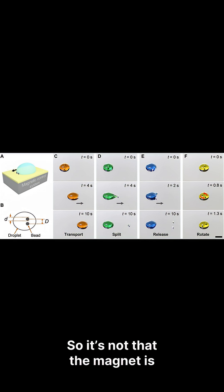So it's not that the magnet is pulling the oil or water directly. It's pulling the magnetic stuff at the boundary, and the boundary controls everything.